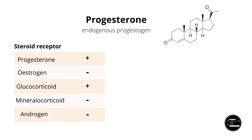Now I'm going to start going into the steroid receptor profile of progesterone. Progesterone activates the progesterone receptor, but also has activity on the other steroid receptors too. Here's an example of steroid hormone cross-talk, whereby progesterone is also able to activate glucocorticoid receptors. It's not completely clear why it does this — it might have something to do with immune system modulation during pregnancy — but other than that I'm not going to go much further into it, other than to say it's certainly interesting.